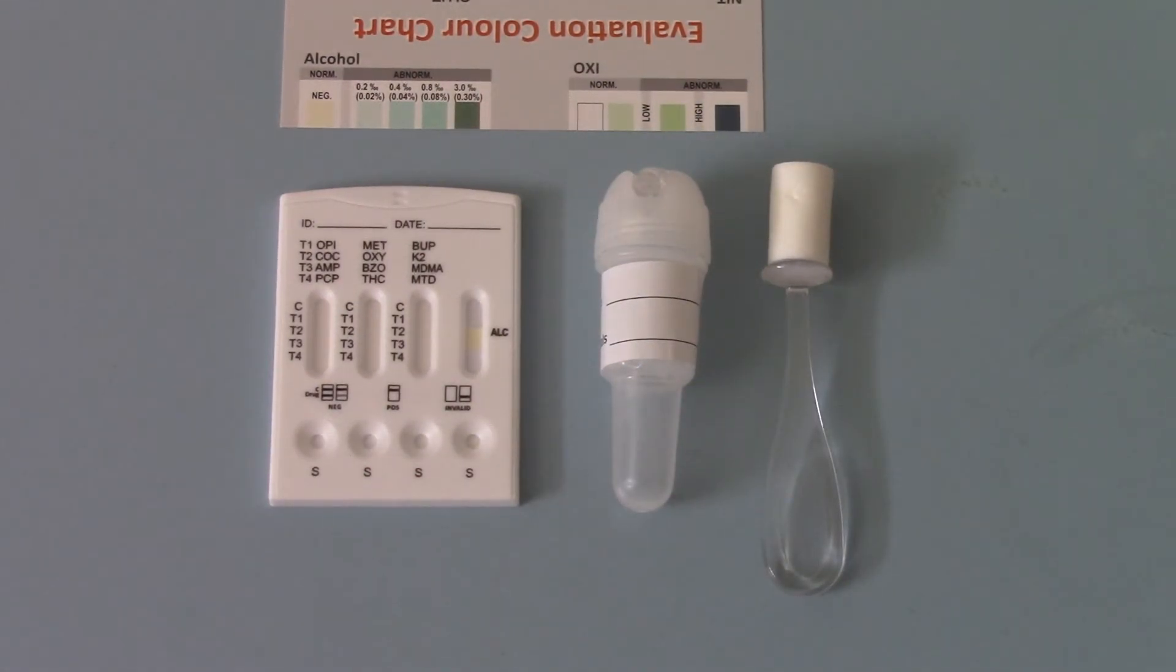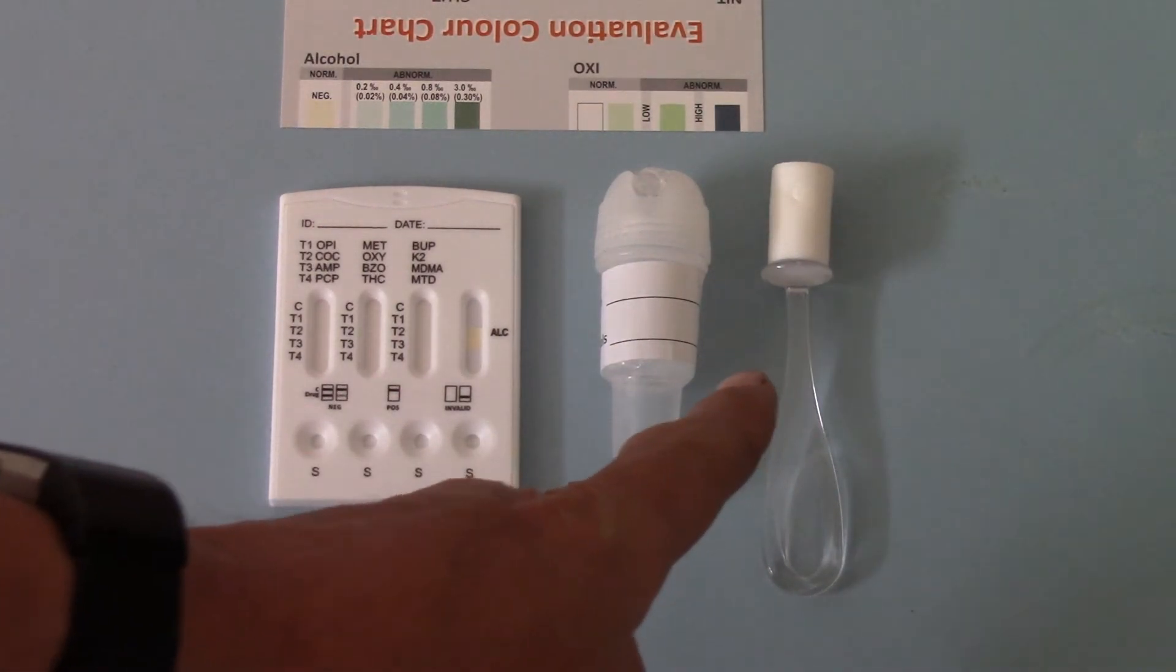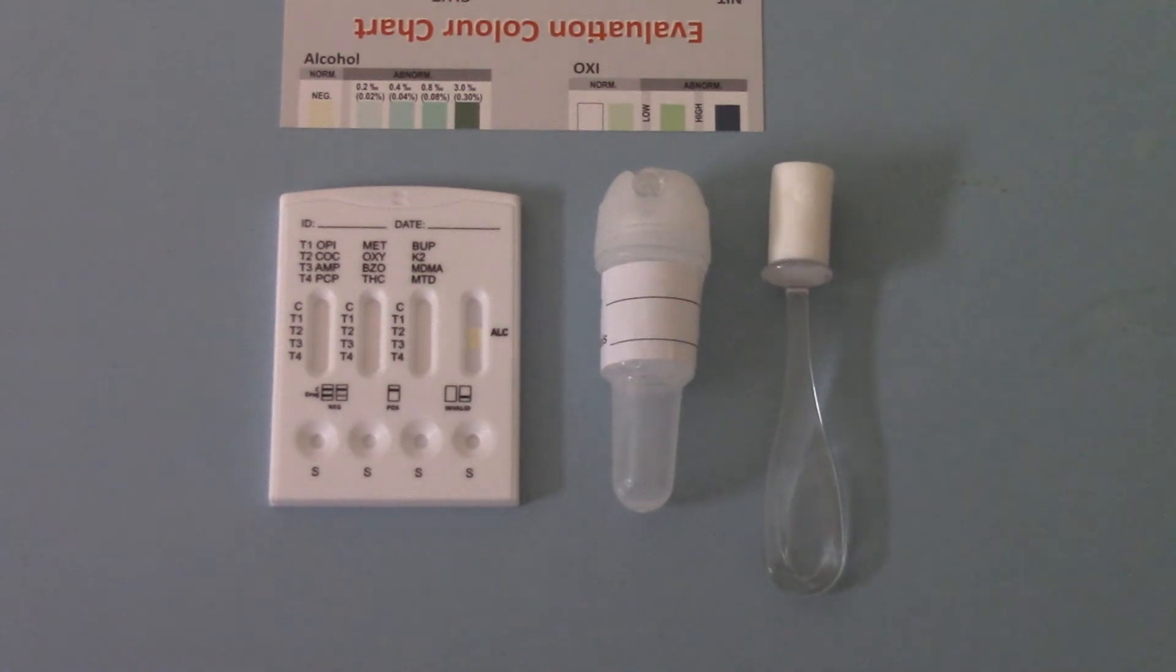So what we're going to do now is saturate the swab collector in a saliva sample, process that through the collector for you, and add it into the sample wells to show you the test running.